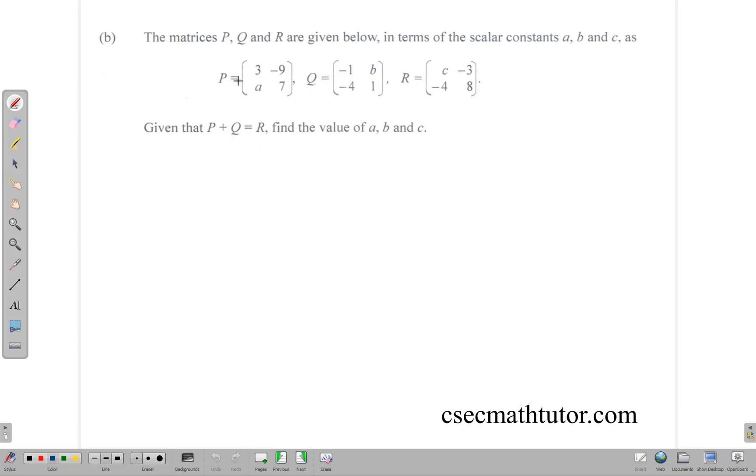That's the end of the vectors part. And matrices, given P, Q, and R are matrices, and some information is given, P plus Q is equal to R, and we have to find the values of A, B, and C. So these matrices are all the same size, which makes it easier. So P plus Q is equal to R.